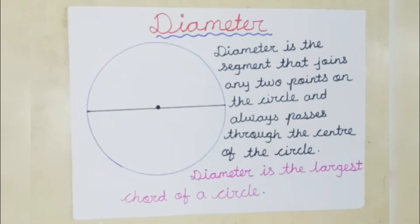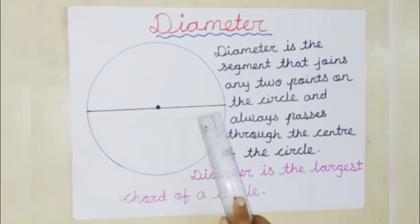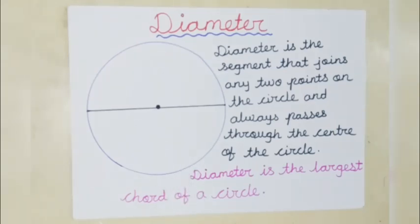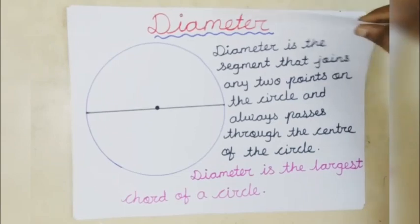Now let's learn about diameter. Diameter is the segment that joins any two points on the circle and always passes through the center of the circle. Diameter always passes through the center. Diameter is the largest chord of a circle. But what is meant by chord? Let's learn.